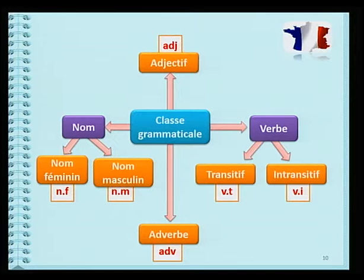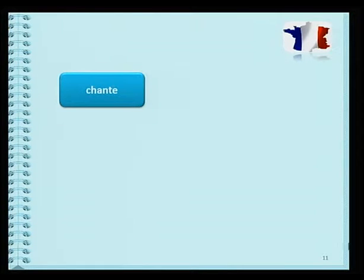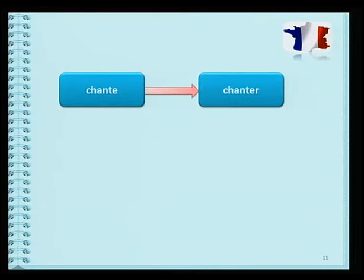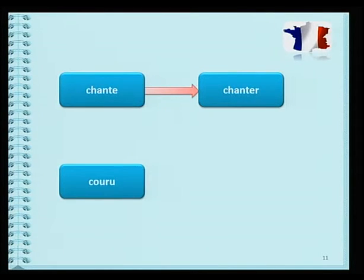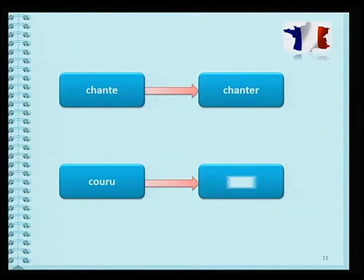Si le mot est un verbe conjugué, il te faut retrouver son infinitif. Par exemple, chante devient chanter avec -er. Couru devient courir. Ce sont les deux qu'on cherche: chanter en -er, courir en -ir.